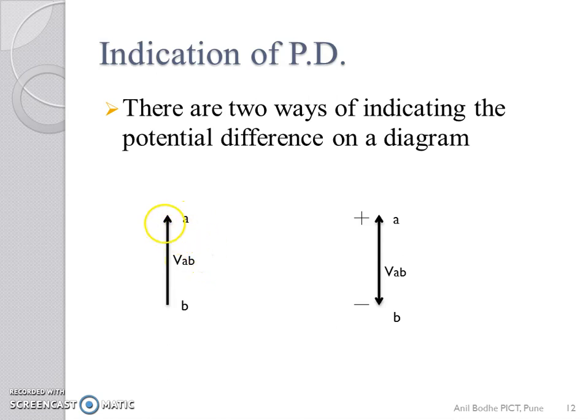If nothing else is indicated, then the ground or common point in the circuit is considered as the reference point for specifying a voltage at some other point.